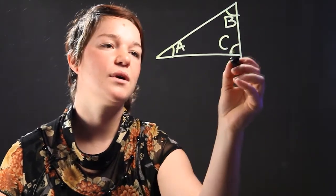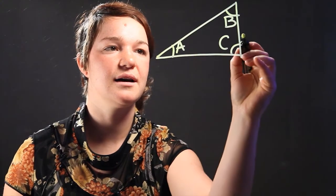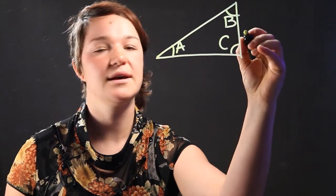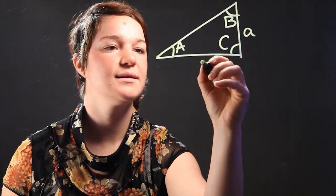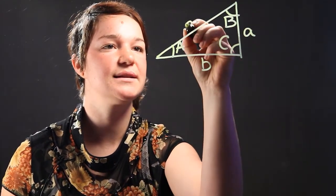Now, we'll call the corresponding sides, or the side opposite of the angle, the small letter. We'll call this little a, this is little b, and this is little c.